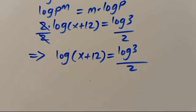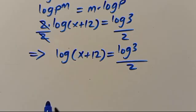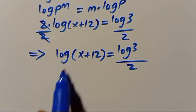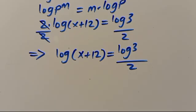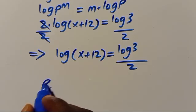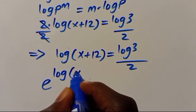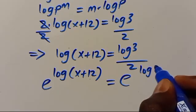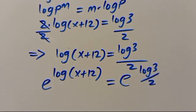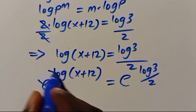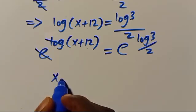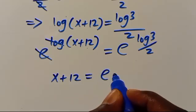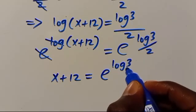From here we want to get the value of x, but we have log here. Let us take the exponential of both sides. So we have e to the power of log(x + 12) equals e to the power of log 3 over 2. This e cancels out, so we have x + 12 equals e to the power of log 3 over 2.